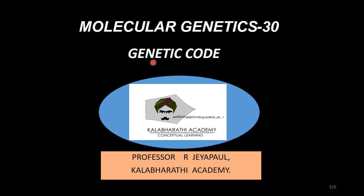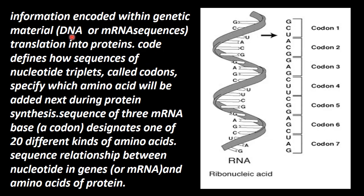These nucleotides act as the code for amino acids. In different combinations, they produce different types of proteins. Now, we will see what the genetic code is. Genetic code is the information encoded within the genetic material.